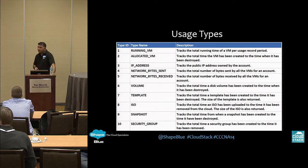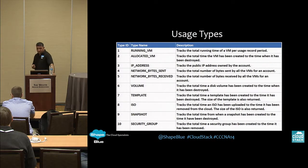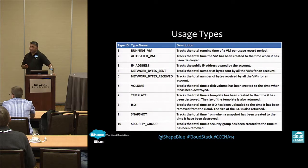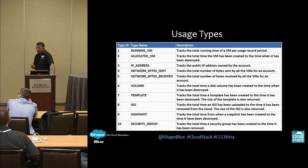In terms of the types of information you can capture usage data for — we've got VMs with two separate record types. One is for when a VM is actually running, meaning the duration from when you start and stop the VM. The allocated VM is slightly different — that's from the time the VM was created to the time the VM was actually destroyed. Depending on whether your billing mechanism is utility billing or whether you're interested in the actual VM creation time versus actual running time, those different usage types become useful.